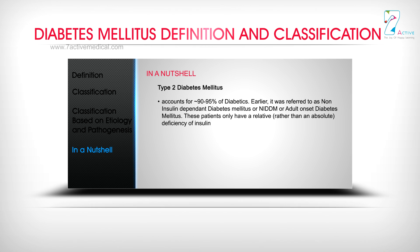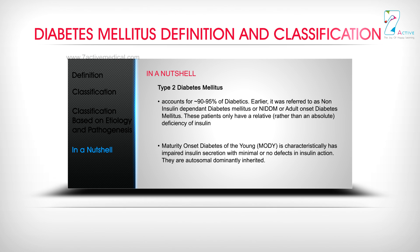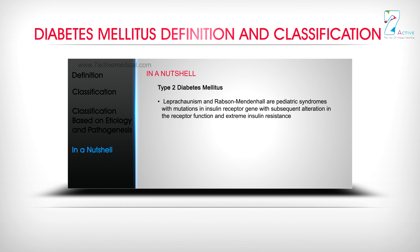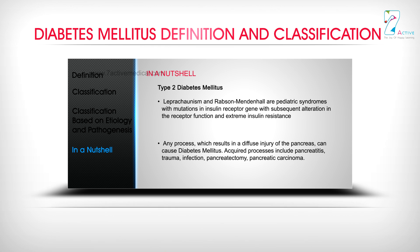Type 2 diabetes mellitus accounts for 90–95% of diabetics. Earlier, it was referred to as non-insulin-dependent diabetes mellitus (NIDDM) or adult-onset diabetes mellitus. These patients have only a relative rather than an absolute deficiency of insulin. Maturity-onset diabetes of the young (MODY) characteristically has impaired insulin secretion with minimal or no defects in insulin action, and is autosomal dominantly inherited. Leprechaunism and Rabson-Mendenhall are pediatric syndromes with mutations in the insulin receptor gene with subsequent alteration in receptor function and extreme insulin resistance.